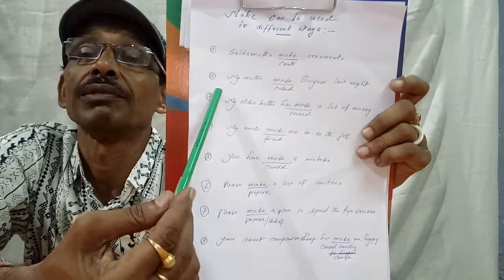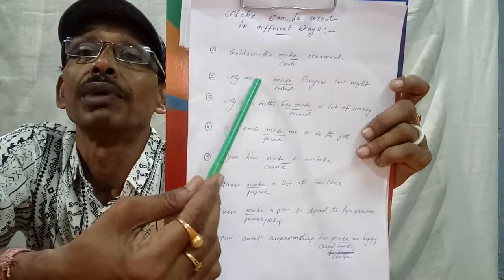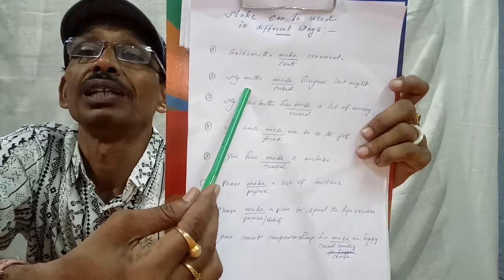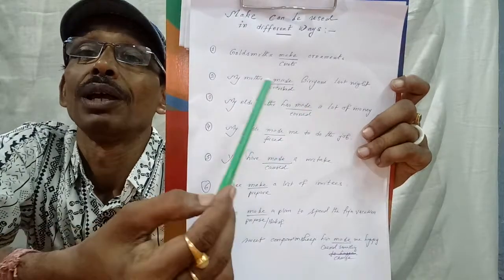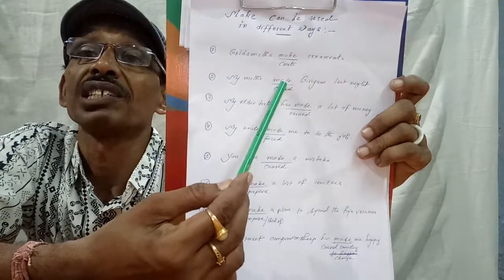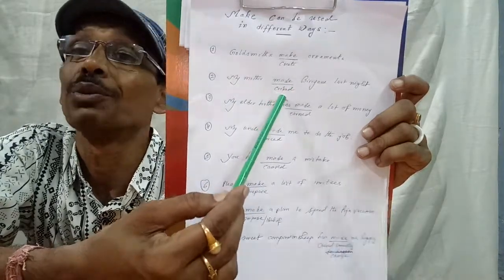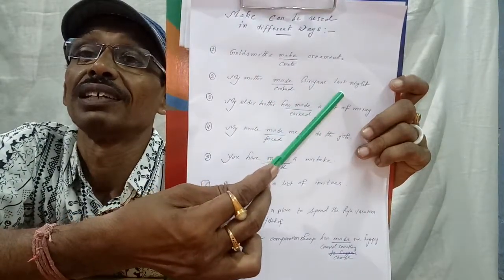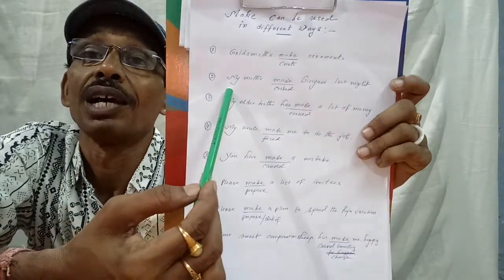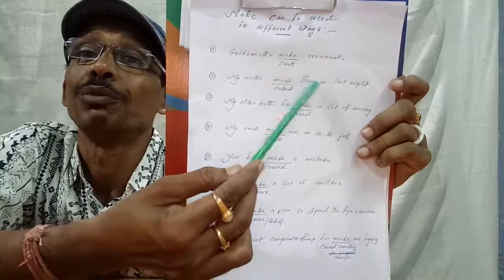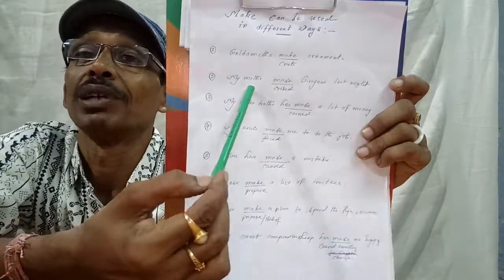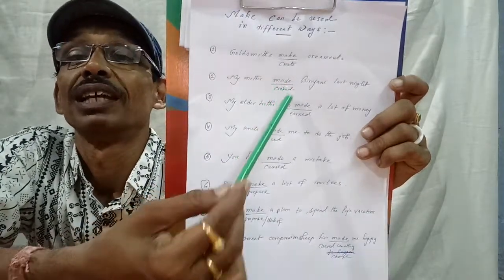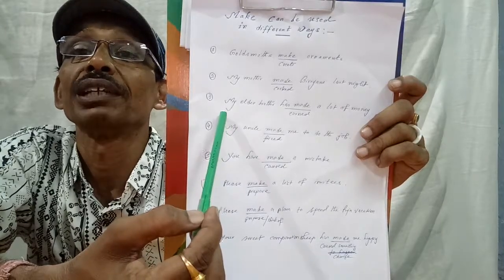Second example: 'My mother made biryani last night.' Here 'made' is the past form of 'make' and it means 'cooked.' So we can also say 'My mother cooked biryani last night.' Instead of 'cooked' we can use 'made' here.